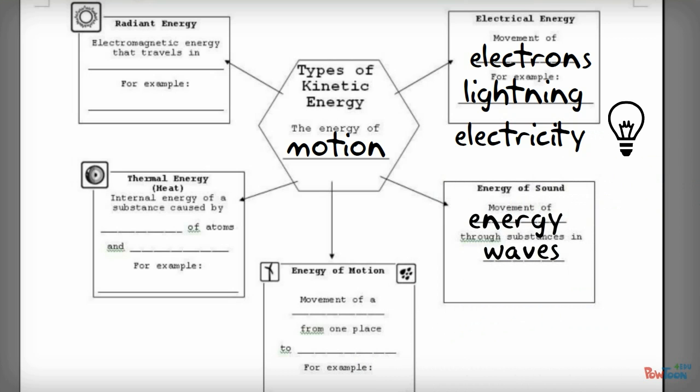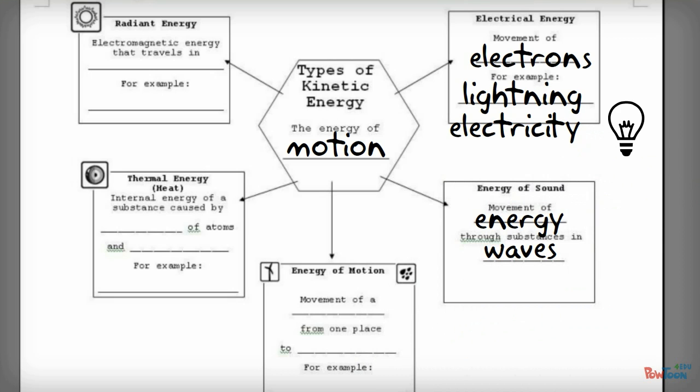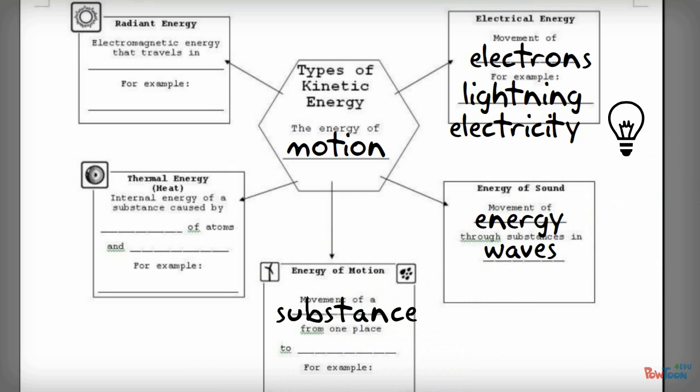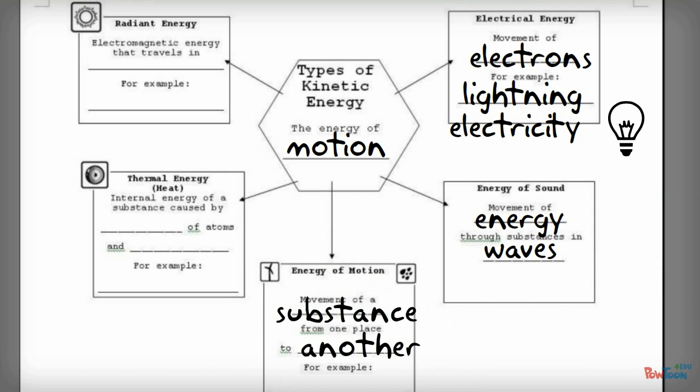There's also just the general energy of actual physical motion. So this would be the movement of a substance from one place to another. And you might be thinking that sounds kind of vague, but we actually use this energy of motion more and more frequently to produce electricity and other types of usable energy for us.